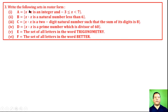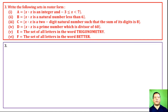Question 3: Write the following sets in the roster form. (i) A = {x : x is an integer and −3 ≤ x < 7}. Since x is an integer, the roster form is A = {−3, −2, −1, 0, 1, 2, 3, 4, 5, 6}.